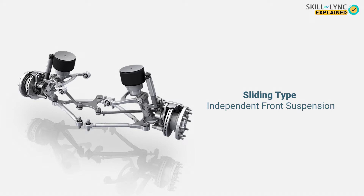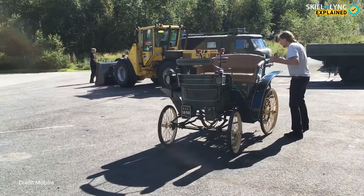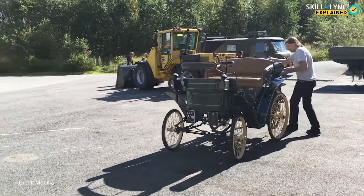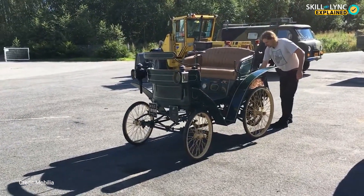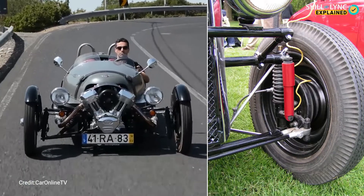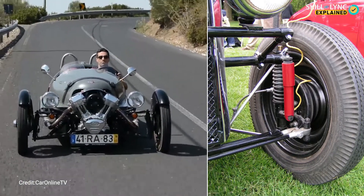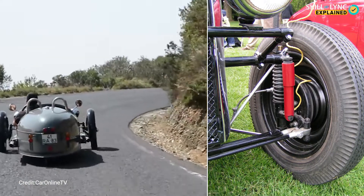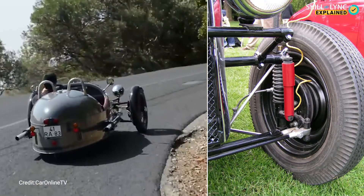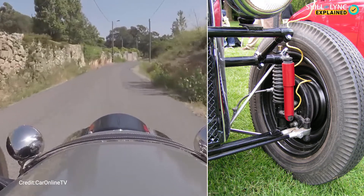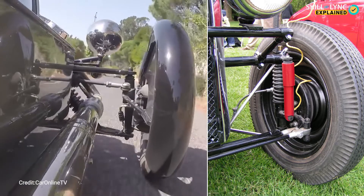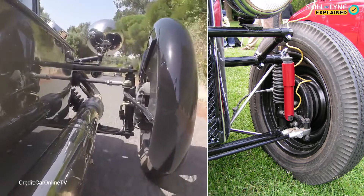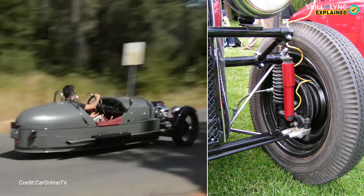The third type is the sliding type independent front suspension. This type of suspension was used in lightweight cars and was first used by the Corville automobiles in 1898. The stub axle and the wheels were attached to a vertical pillar, so the stub axle would move up and down, and in case of steering, the stub axle itself rotates. The disadvantage is that the wheel track changes with different suspension movements.